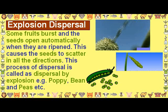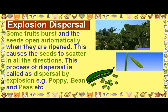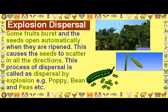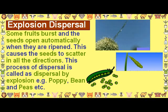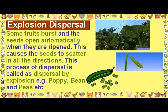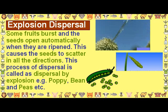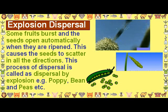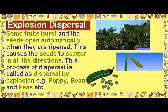Explosion Dispersal. Some fruits burst and the seeds open automatically when they are ripe, causing the seeds to scatter in all directions. This process is called dispersal by explosion. Examples include poppy, bean and peas.